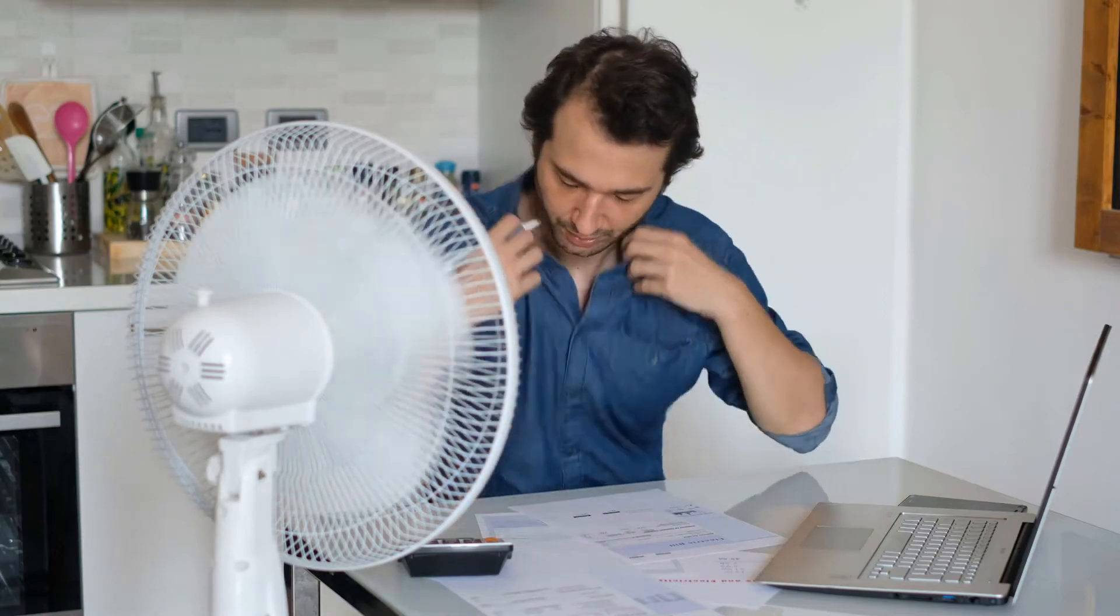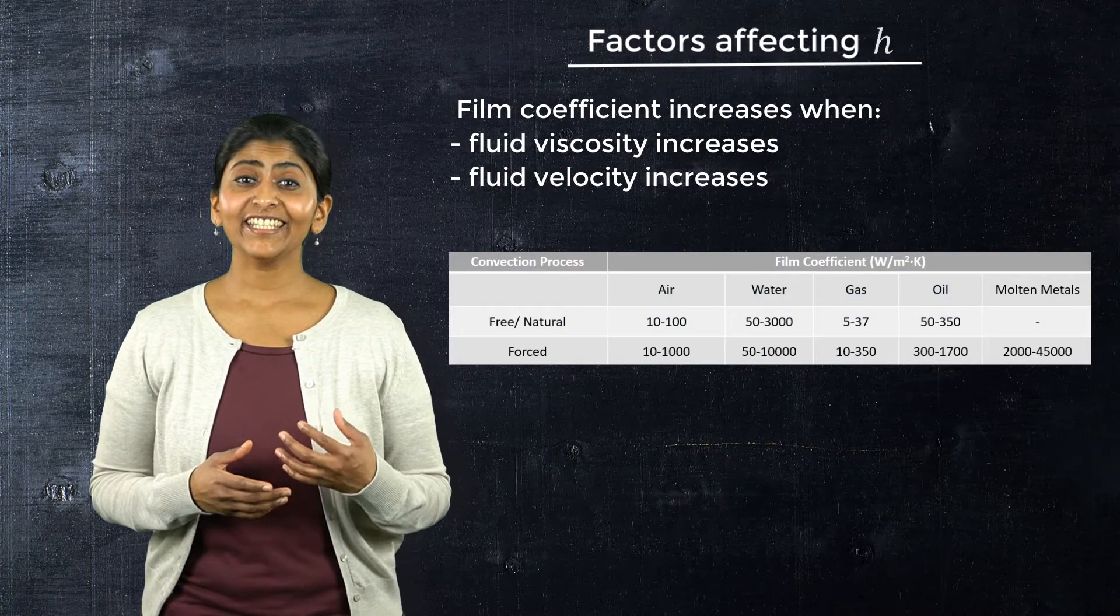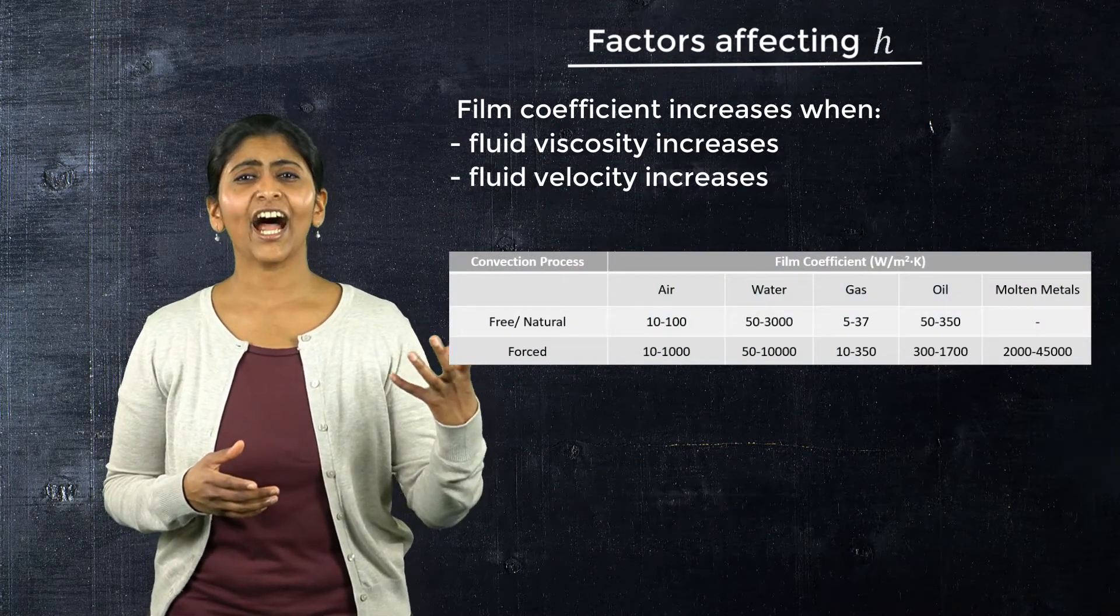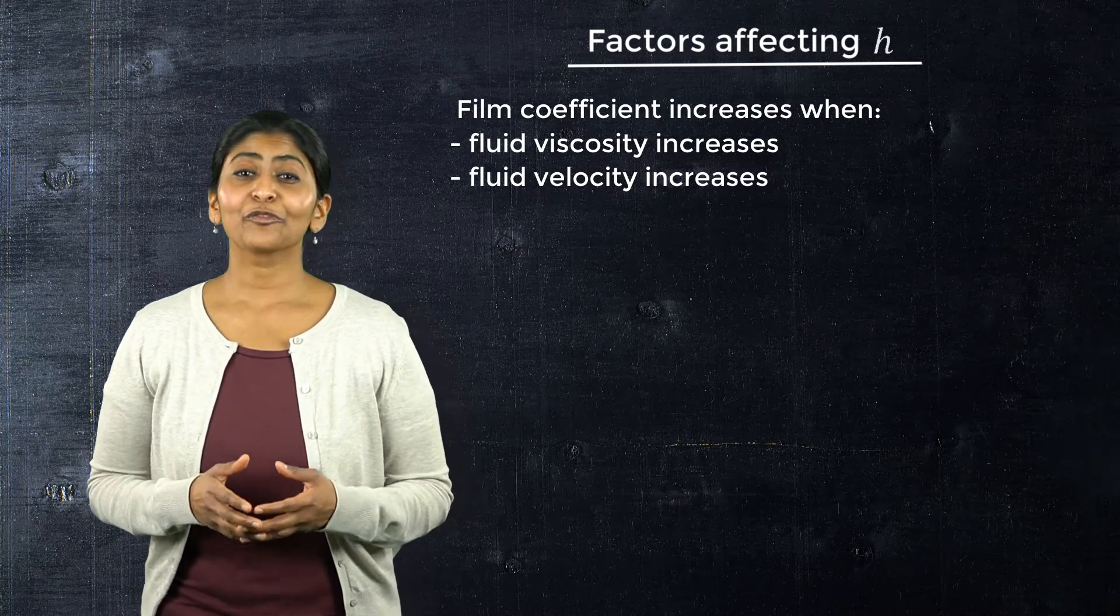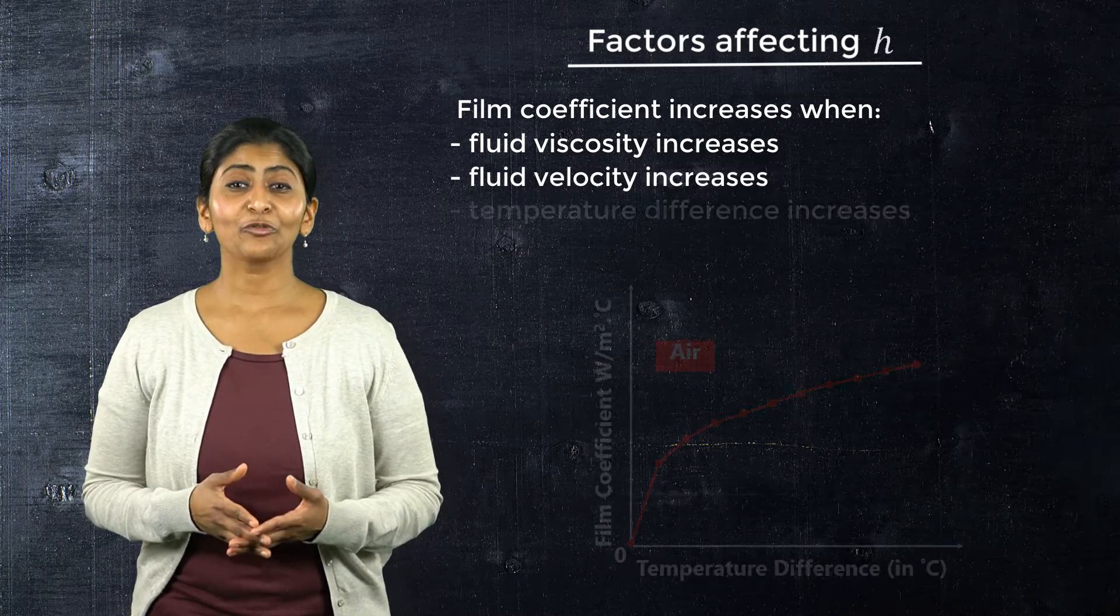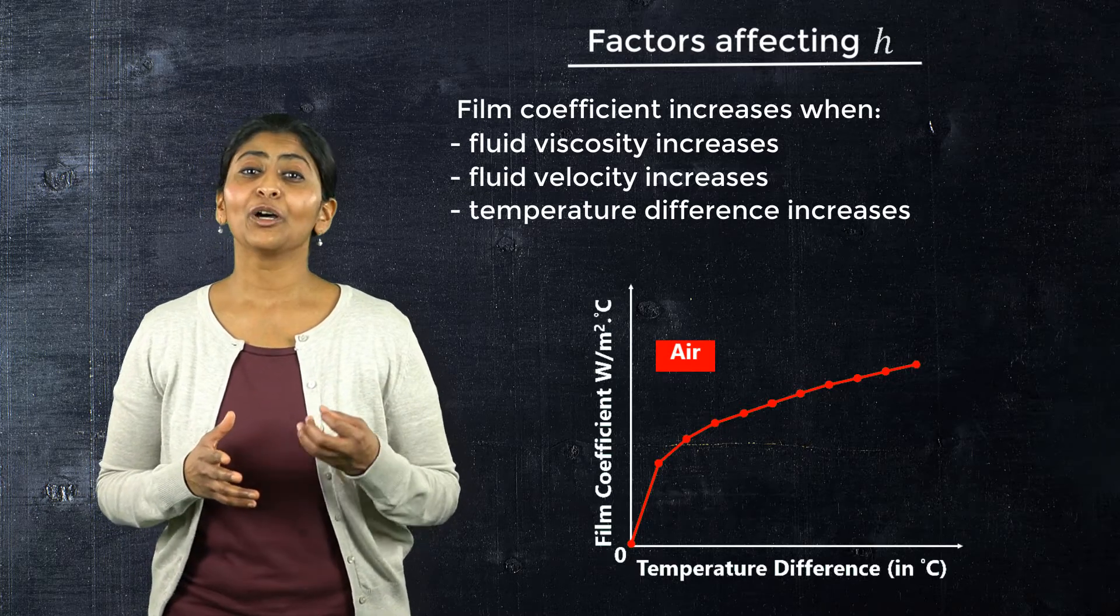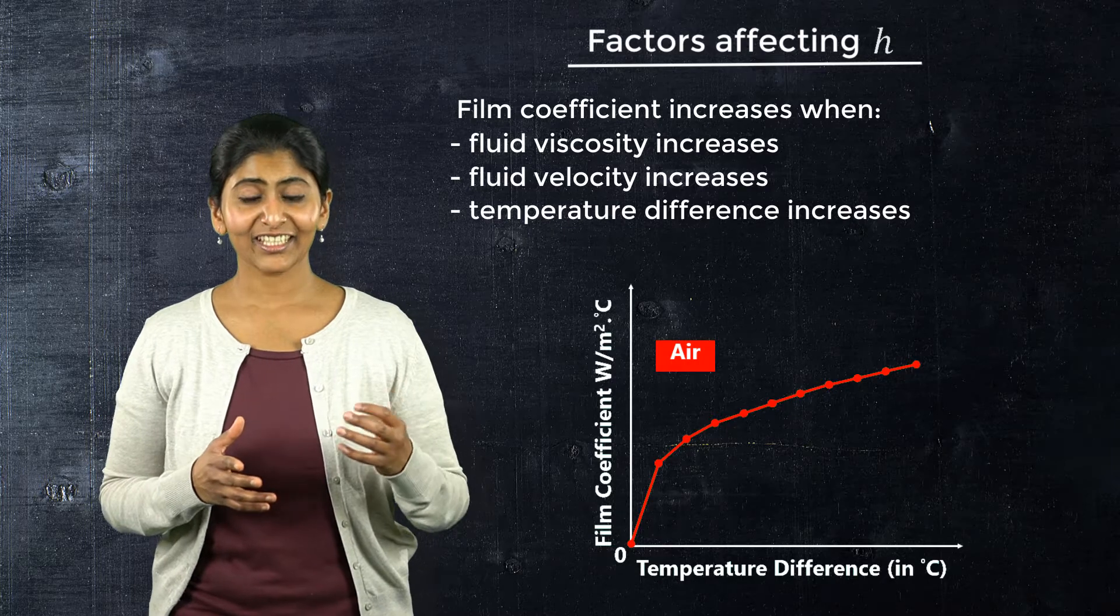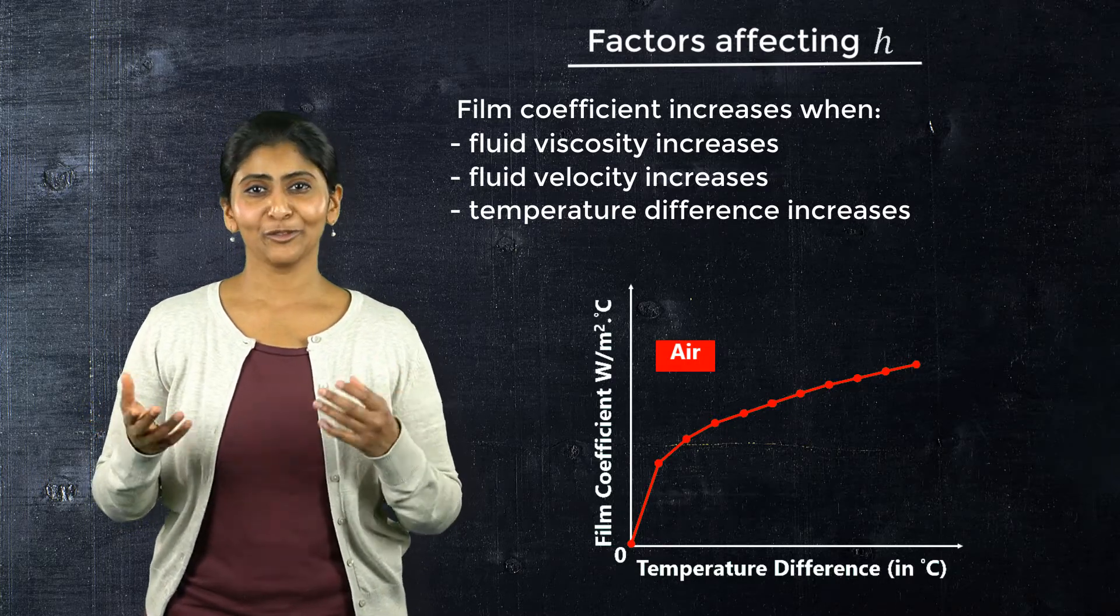A common example of this in our daily lives is when we switch on the fan on a hot day to cool ourselves. Forced convection occurs when a fan is switched on and due to the higher film coefficient, heat is removed from our body at a faster rate. Similarly, from the graph shown here, we can see that the film coefficient increases with an increase in temperature difference between the surface of the solid and the fluid.